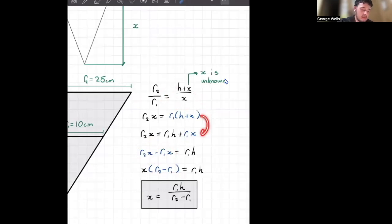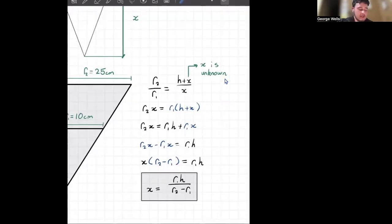So what I've done here is I've cross-multiplied. Then I've expanded the bracket. Then I've put the r1x to the other side to help collect like terms. Then I've factorized to get to here.